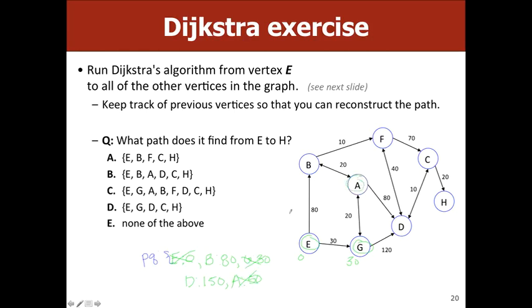From A with cost 50, we can update B to 70 (50+20), which is less than 80, so B's priority changes to 70. We also enqueue D with cost 130. Next we dequeue B with cost 70. From B, F is enqueued with cost 80.